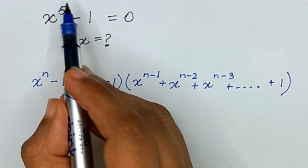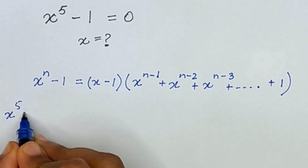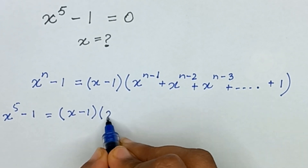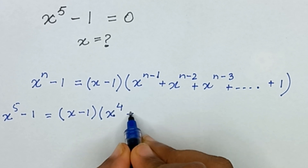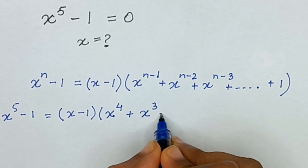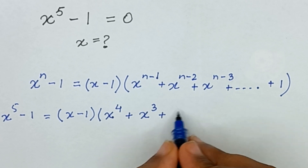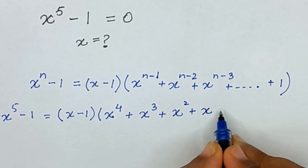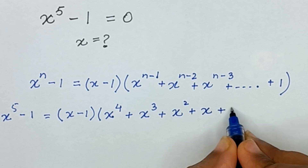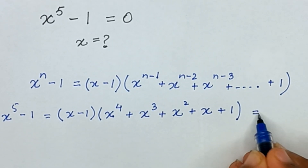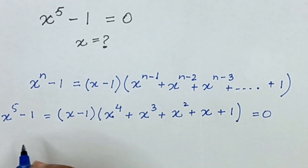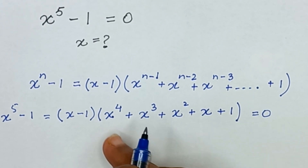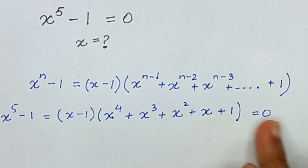Here we have n equal to 5. So x raised to the power 5 minus 1 equals x minus 1 times x raised to the power 4 plus x raised to the power 3 plus x squared plus x plus 1, and this is equal to 0. From here we have two cases: x minus 1 equals 0, and the factor x⁴ plus x³ plus x² plus x plus 1 equals 0.